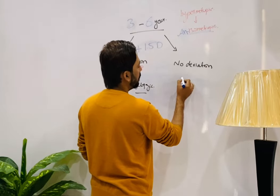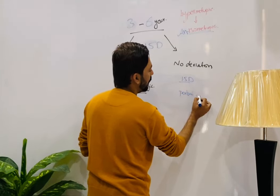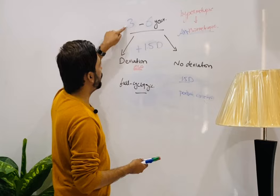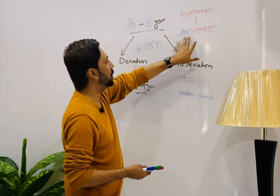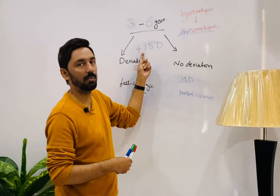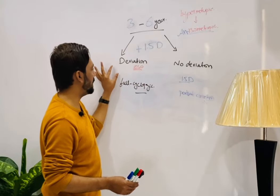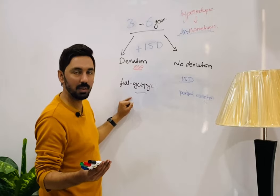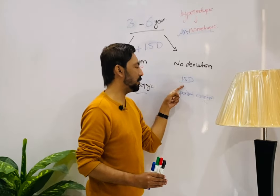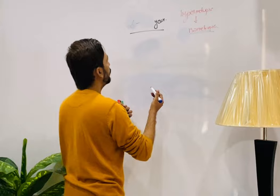For three-to-six years anisometropic hypermetropia: if anisometropia is more than 1.5 diopters without deviation, we will prescribe partial correction. Summary: anisometropia up to 1.5 — no prescription; anisometropia more than 1.5 with deviation — full cycloplegic correction; anisometropia more than 1.5 without deviation — partial correction.